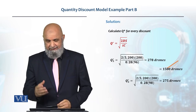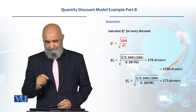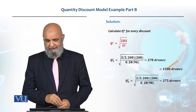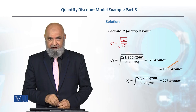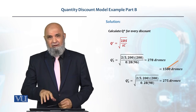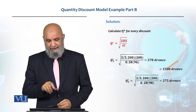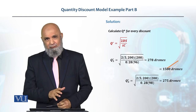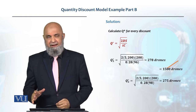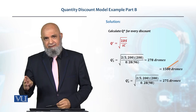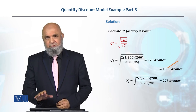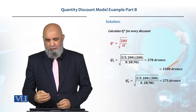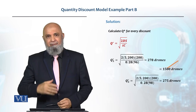We need to adjust Q3 to 1500 drones. On an order of 1500 drones, we will not get the $96 price, so we have adjusted it to 1500. Now for the second price level Q2, the optimum quantity comes to 275 drones. This falls within the range for the $98 price — it is more than 200 and less than 1500, so 275 falls in this range.